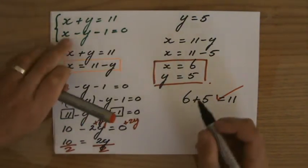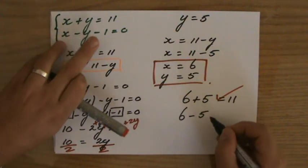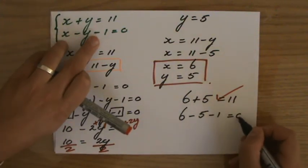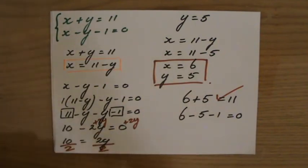Let's check the other one. x, so that is 6 minus y, minus 5, minus 1 is 0. 1 minus 1 is indeed 0. You see?